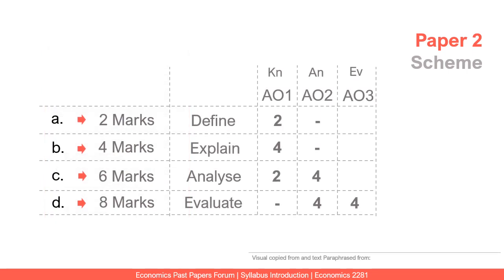For part A, you are judged on knowledge — how well you understand concepts. The action word could be 'define' or 'what is meant by' — a simple, complete definition is required. Part B is usually a question requiring explanation, often with examples, worth 4 marks, testing knowledge of facts, data, and theories. Part C is a 6-mark question where the action word is 'analyze' — you must explain how factors affect a particular concept. It breaks down as 2 marks for knowledge and 4 marks for analysis.